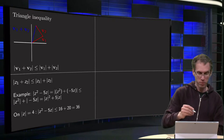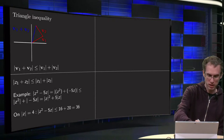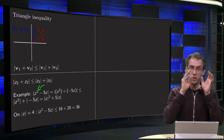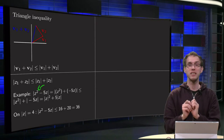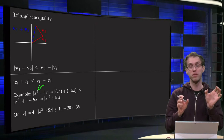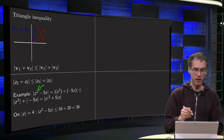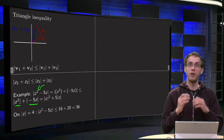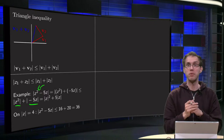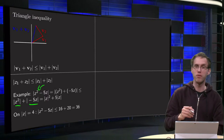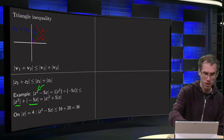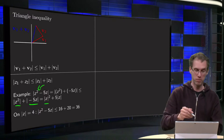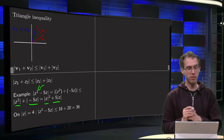So how can you use that? If you want to estimate the quantity |z² − 5z|, you can write it as the norm of z² plus the norm of −5z. Then you have the norm of z1 plus z2, which is smaller than the norm of z1 plus the norm of z2. The norm of z² is the same as the norm of z², and the norm of −5z equals the norm of −5 times the norm of z, which equals 5 times the norm of z.